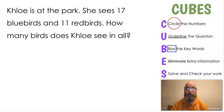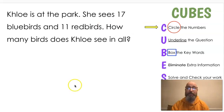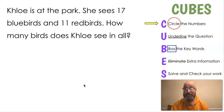This one's about Chloe. Chloe is at the park. She sees 17 bluebirds and 11 redbirds. How many birds does Chloe see in all? Now remember, C for our first step is circle the numbers. Look in the question real quick and see if you can find the numbers. Do you see them? What are they? 17 and 11. That's right. So that's our circle the numbers.